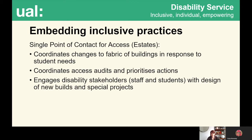The single point of contact for access within our estates department ensures that changes to the fabric of buildings are coordinated swiftly and effectively in response to individual students' needs. They also coordinate the actions arising from regular access audits commissioned across the university's estate, and work with us to prioritise what actions those audit outcomes should be taken in. They engage disability stakeholders — both staff and students — with the design of new buildings and the development of special projects to improve aspects of the estate.